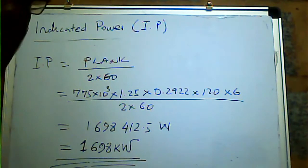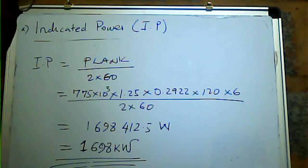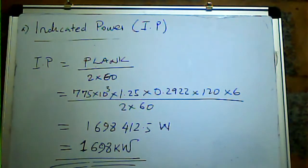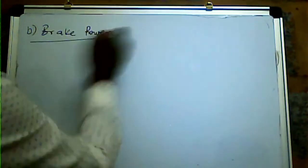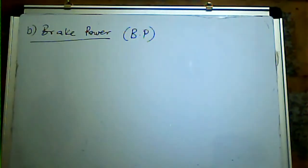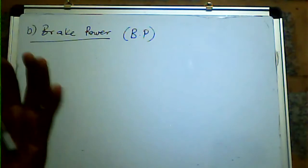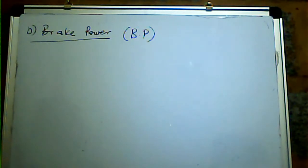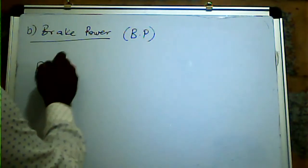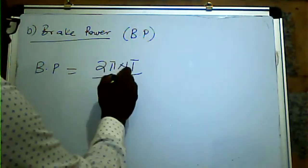We proceed. The next part asks us to find the brake power. Brake power — what is BP? If we were to grab this engine and stop it, how much power is required to do that? The brake power is given by BP = 2πNT / 60.